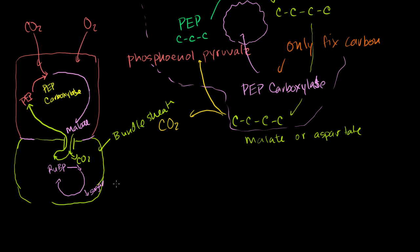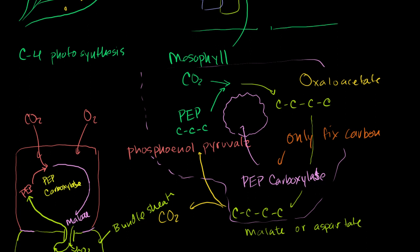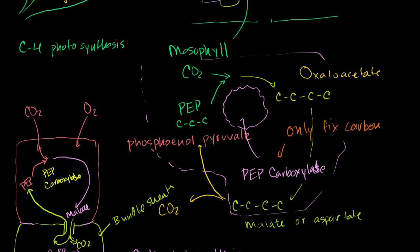This is called C4 photosynthesis — an adaptation to make sure you don't waste Calvin cycle runs through photorespiration. It's called C4 because the first time carbon gets fixed, it doesn't happen in the Calvin cycle. It happens in the mesophyll cell with PEP carboxylase, where CO2 gets fixed with PEP into a four-carbon chain. That's why it's called C4 photosynthesis.